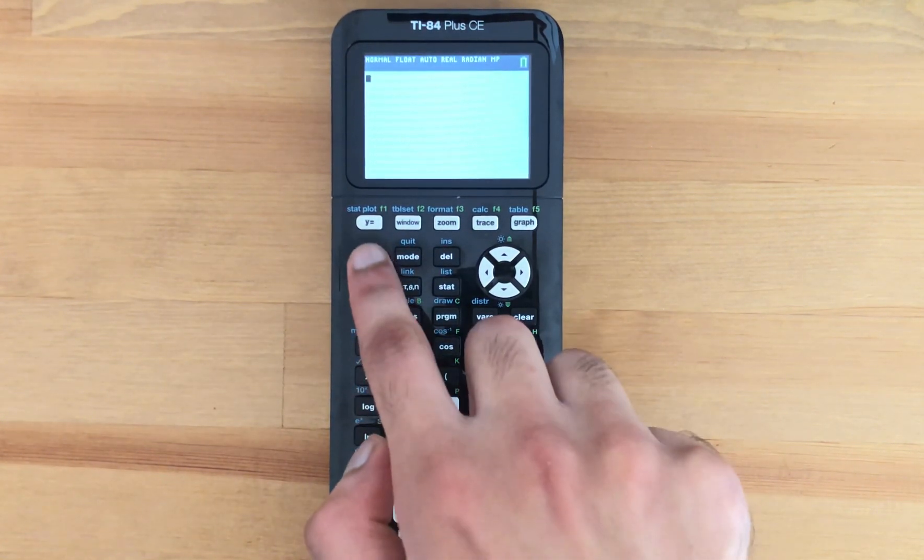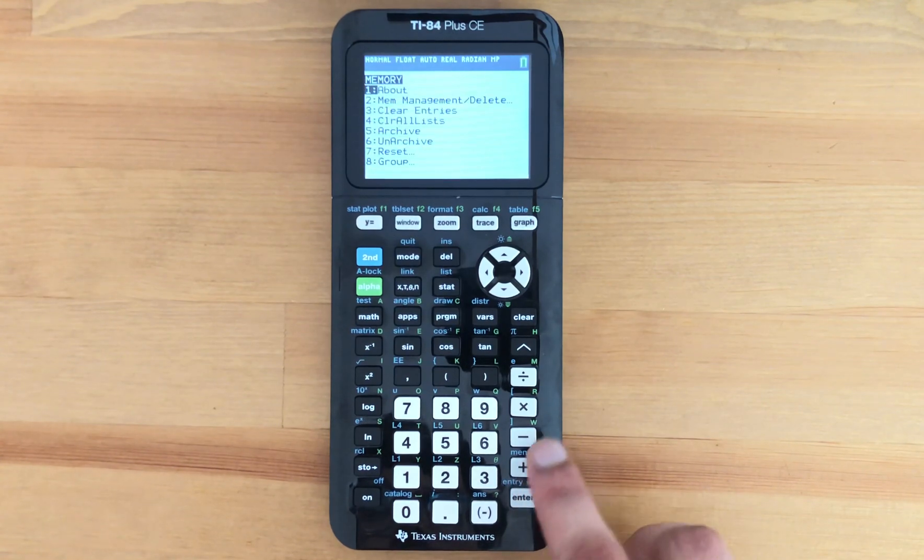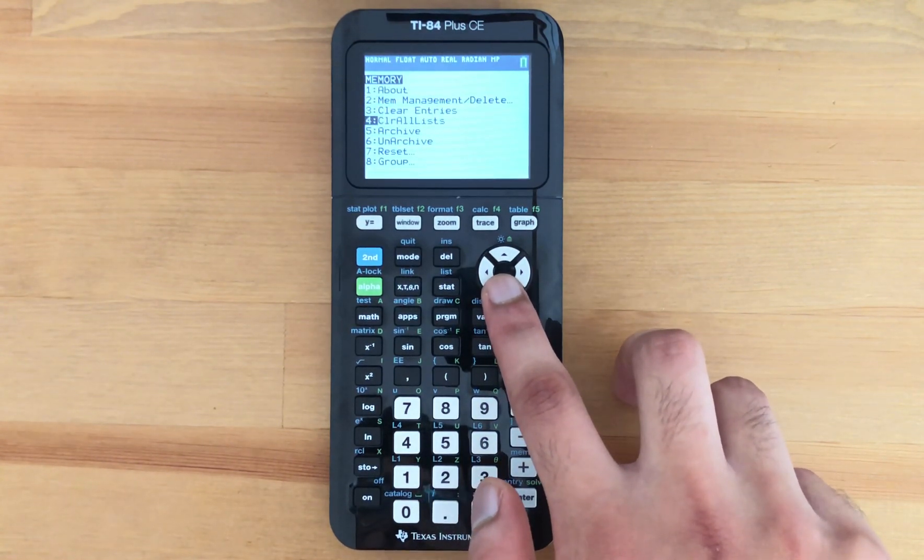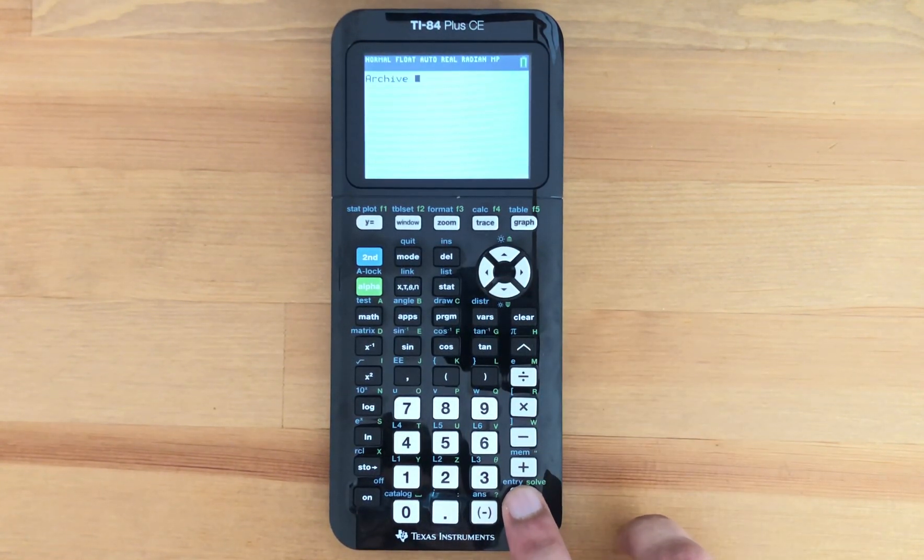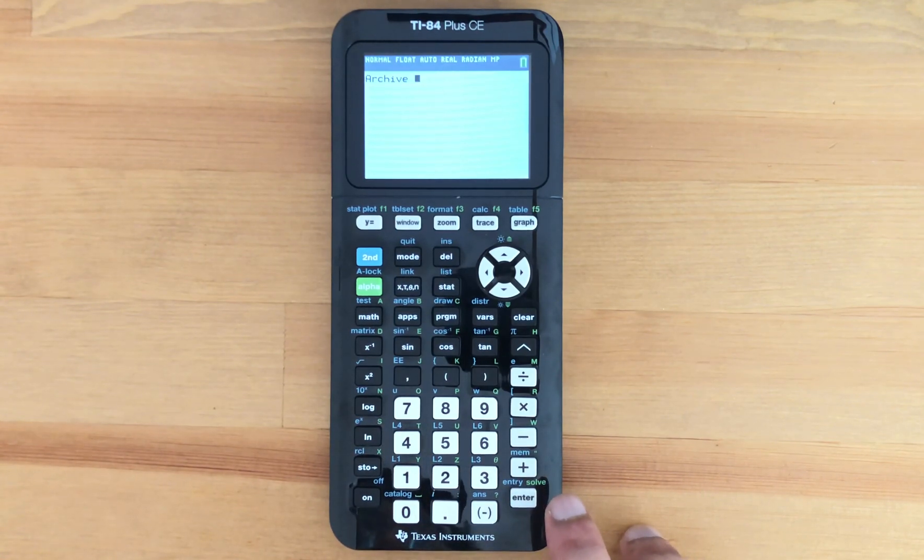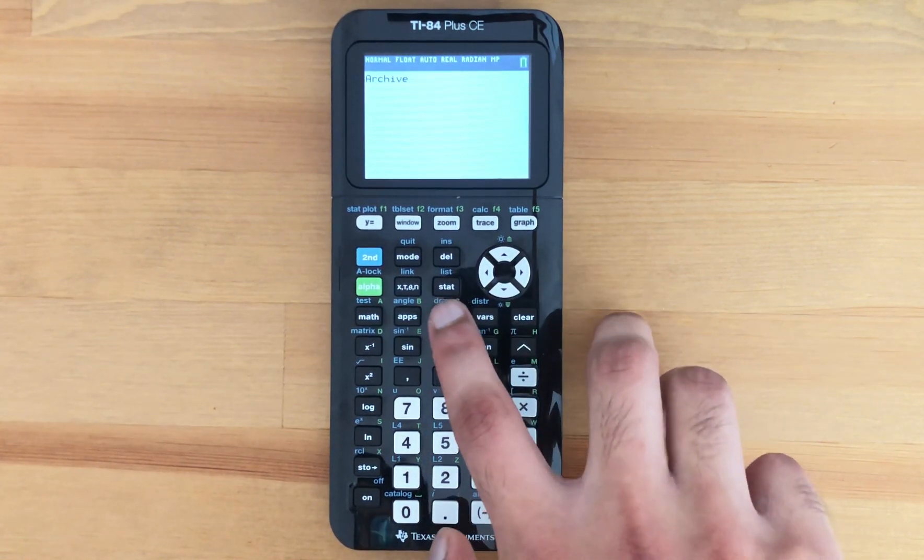So what we want to do is hit second memory, scroll down to archive, and now you want to choose the program that you want to archive. So press program,